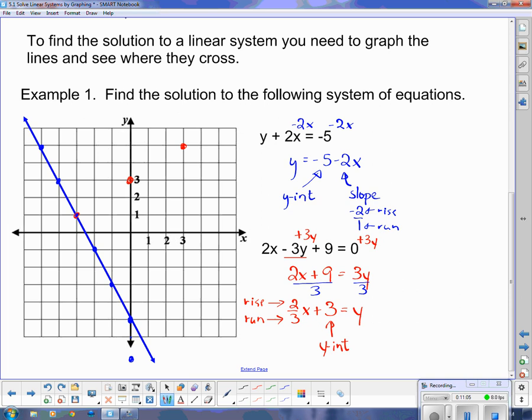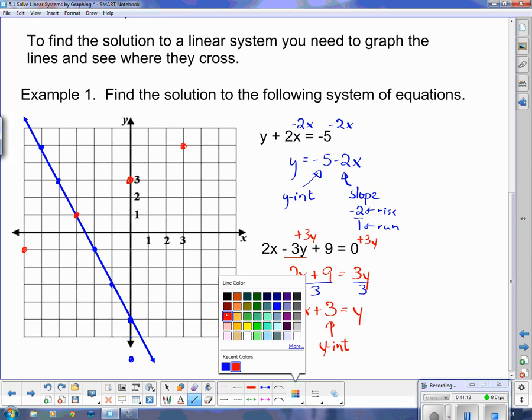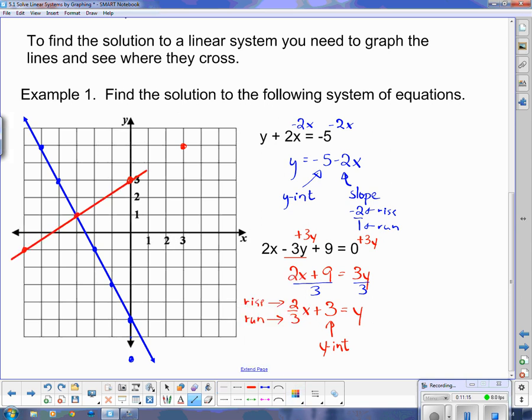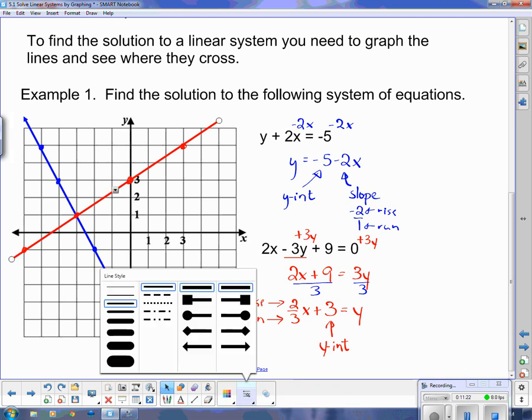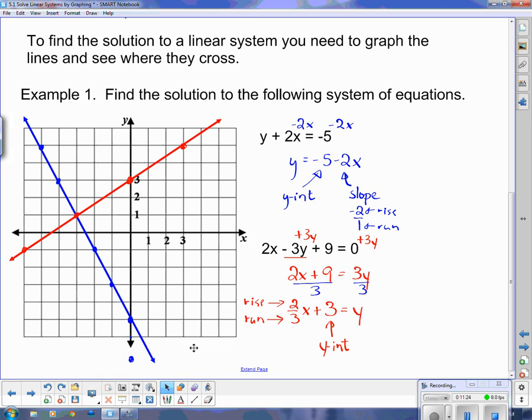And then I have to rise 2 and run 3. And I can follow that backwards if I want. And I think I just found the intersection point. But let's draw on our line anyway. And we'll do that one in red. And again, that one goes off to infinity too. So let's put some points and arrows on the end.